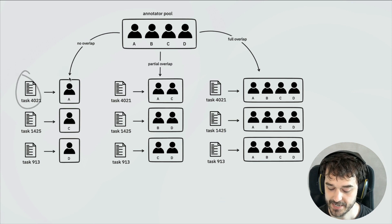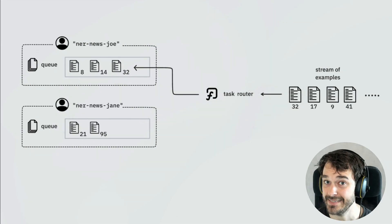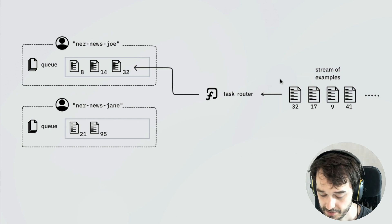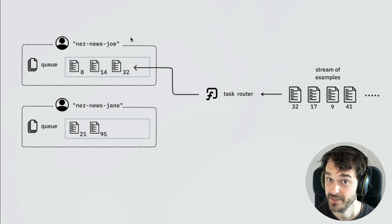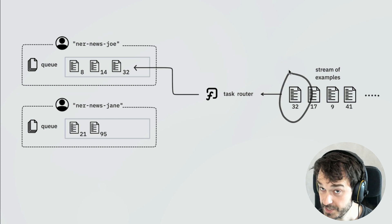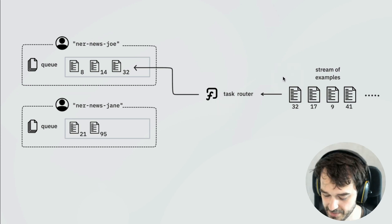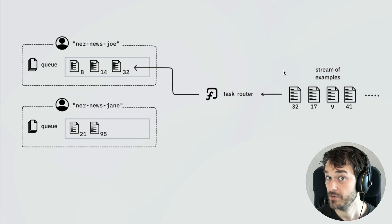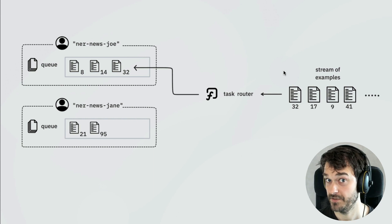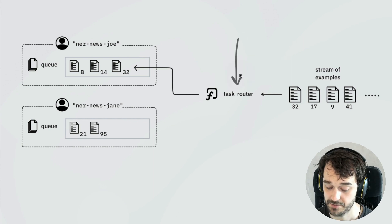The way these new task routers work is that it's basically just a Python function that is called at the time when we have to decide where a task should go. A session is assigned to a user, and when that session needs a new example to annotate, the backend is going to check the stream of all the different examples. For each example, it calls a Python function that serves as a task router, which then gives a list of all the sessions that a task will need to go to.